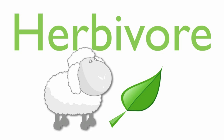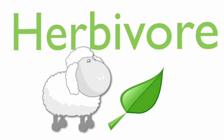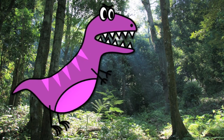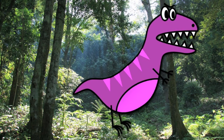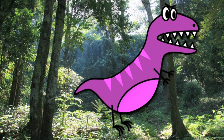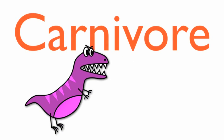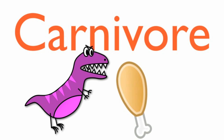Let's go back in time to observe another type of consumer. The T. rex was an animal that ate only meat. The Tyrannosaurus rex was a consumer known as a carnivore. A carnivore is an animal that eats meat for food.